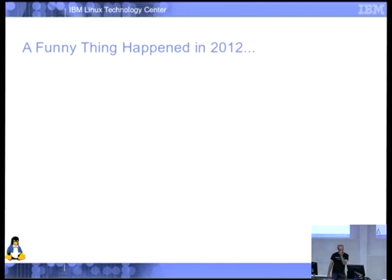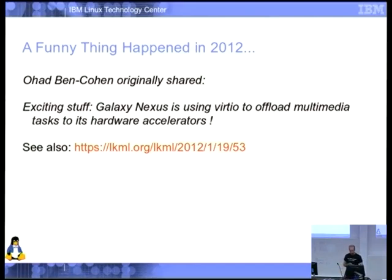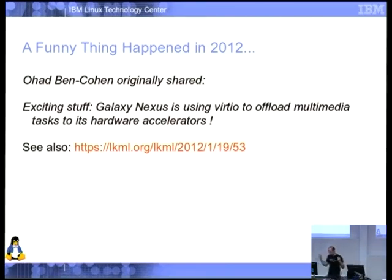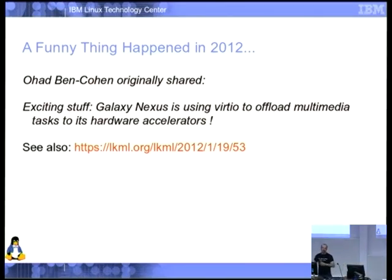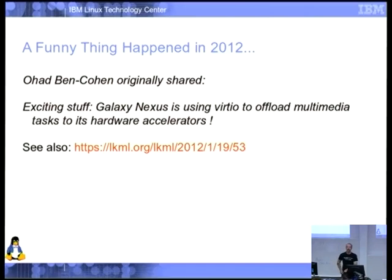In 2012 a strange thing happened — this is from a Google Plus post I had given permission to repost. The Galaxy Nexus device actually uses VirtIO to talk to effectively the AMP system — the other chips on the machine. They said let's use VirtIO, virtqueues and everything, to communicate. They came out with a method called RP message, which is now in the kernel. They took the similar idea that you've got a guest and host, where the host can view all the guest's memory but not vice versa, and it maps straight across to VirtIO. So they use VirtIO in devices we all have in our pockets.